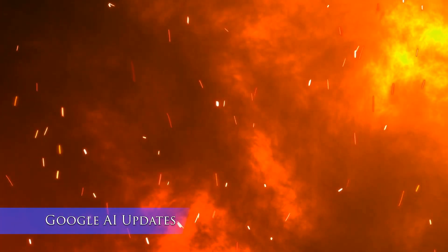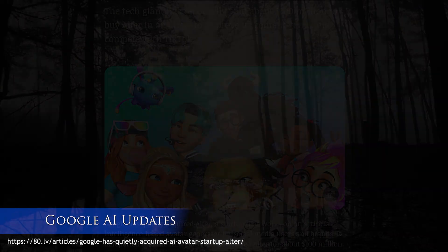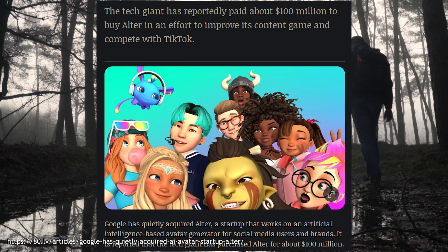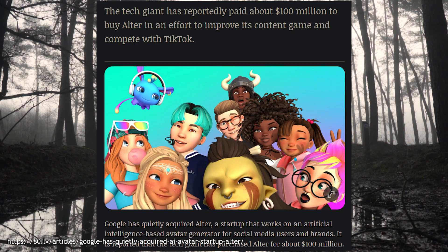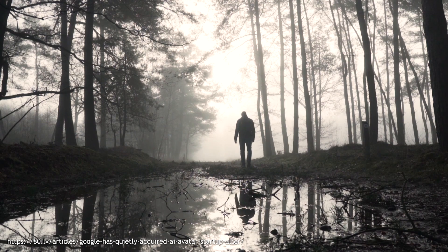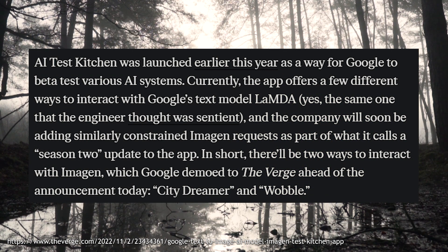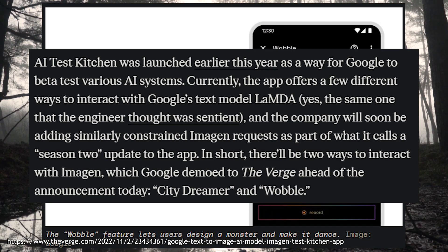On the topic of Google, they purchased a company called Alter that no one's heard of, but they'll probably use it for their version of TikTok, maybe for YouTube Shorts. Alter looks to be an AI avatar service. And their version of an AI art generator called Imagen — I'm not really sure how they pronounce it — is going to be coming out in a very limited capacity with limited prompts. If you're interested, you can download their Test Kitchen application.